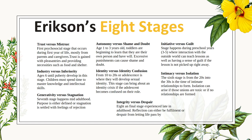Then there is intimacy versus isolation, between ages 20s and 30s. This is when you're forming intimate relationships with people. Isolation can happen if those unions are not formed or are formed badly. The seventh stage, going into adulthood, is generativity versus stagnation, where stagnation is settled with feelings of rejection. The final stage — the eighth — is integrity versus despair, experienced late in adulthood. It's a reflection on life and whether you succeeded in what you wanted to do, or just kind of let it go by.